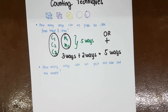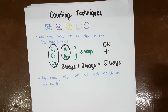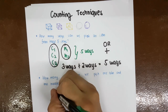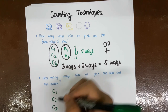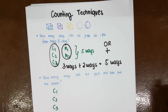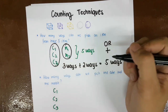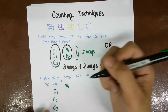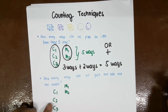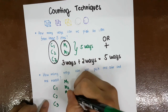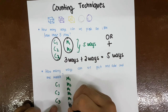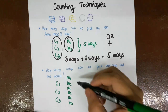Next question: how many ways can we pick one cube and one marble? Let's list them. After picking cube one, we can also pick marble one or marble two. After picking cube two, we can pick marble one or marble two. After picking cube three, we can again pick marble one or marble two. So how many ways in all? There are six ways.